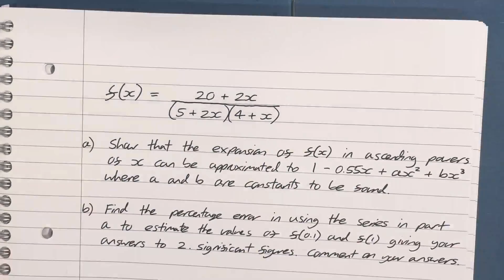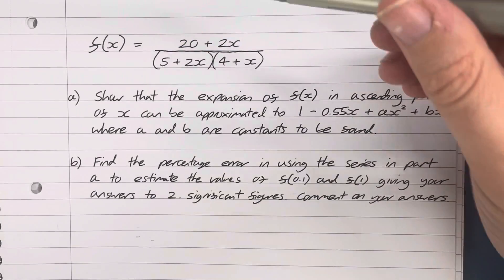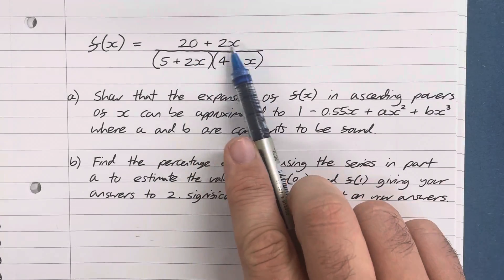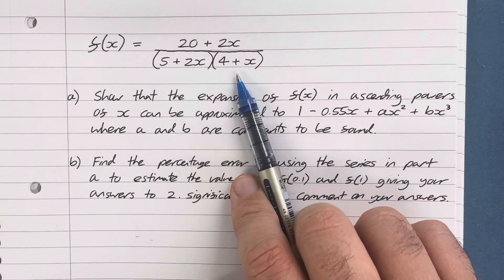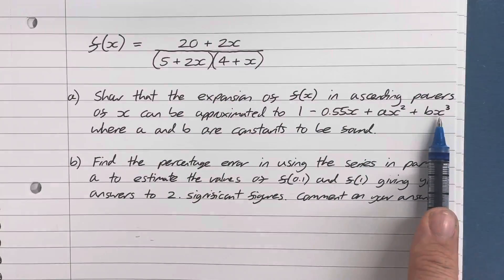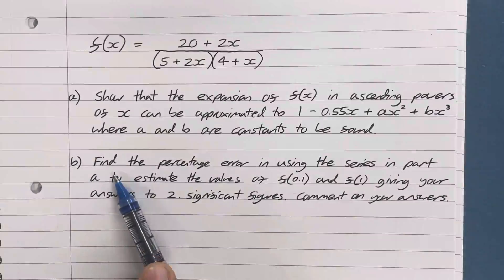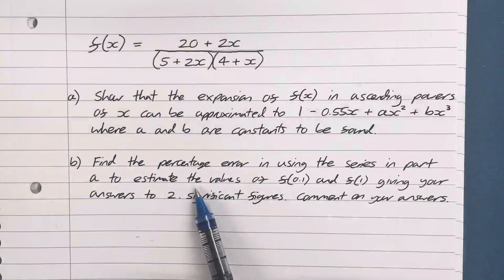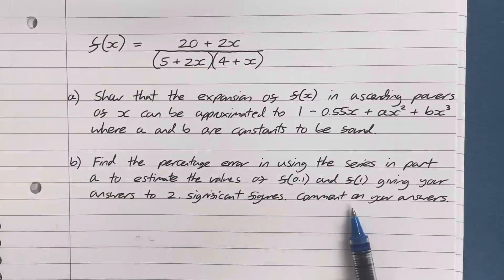This video goes through a very similar question: f(x) = (20 + 2x) / ((5 + 2x)(4 + x)). Part a asks to show it equals a cubic expansion and find the coefficients A and B. Part b asks to find the percentage error in using the series from part a to estimate f(0.1) and f(1), giving answers to 2 significant figures, and to comment on those answers.